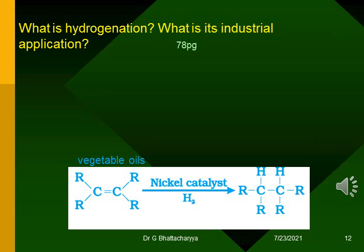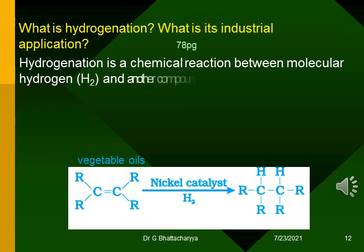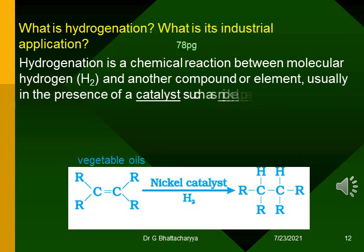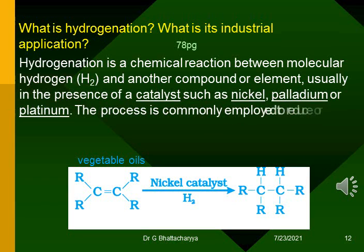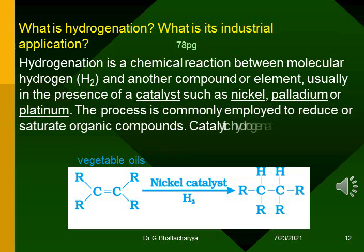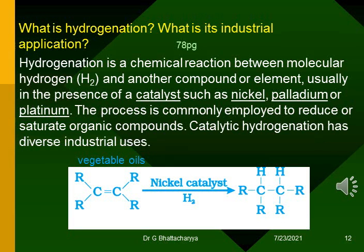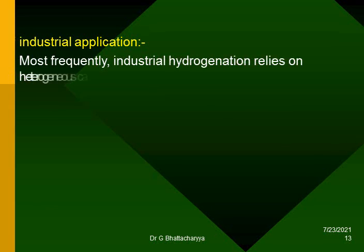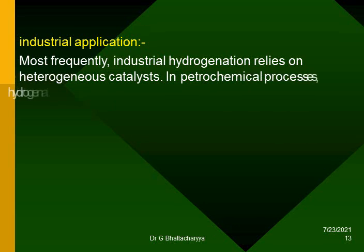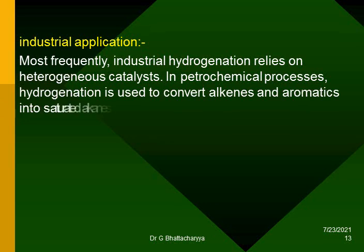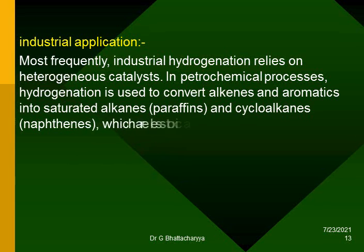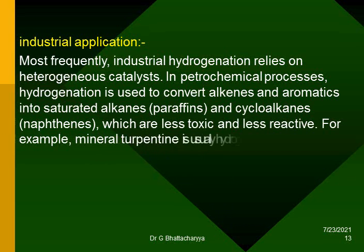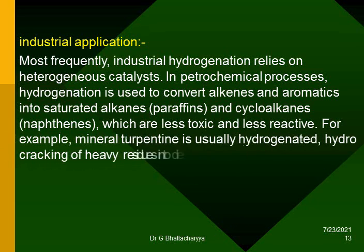What is hydrogenation? What is its industrial application? Hydrogenation is a chemical reaction between molecular hydrogen (H2) and another compound or element, usually in the presence of a catalyst such as nickel, palladium, or platinum. The process is commonly employed to reduce or saturate organic compounds. Industrial application: industrial hydrogenation relies on heterogeneous catalysts. In petrochemical processes, hydrogenation is used to convert alkenes and aromatics into saturated alkanes and cycloalkanes (naphthenes), which are less toxic and less reactive. For example, mineral turpentine is usually hydrogenated, and hydrocracking of heavy residues into diesel.